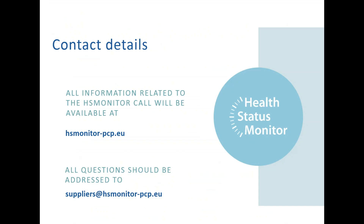If you have any questions, you can address them to the email address: suppliers@hsmonitor-pcp.eu. There is also a section on the website where you can find this email address. All questions and answers will be gathered in an FAQ section on the website to keep the process transparent, so access the website any time you are looking for information.